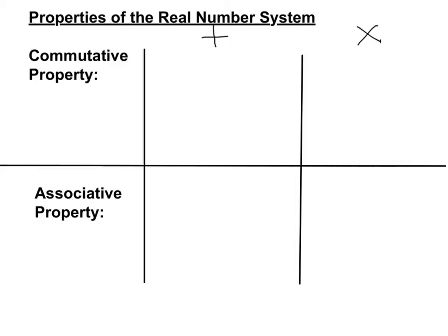The first property is the commutative property, which says that if you have any two real numbers and you add them together, a plus b is equal to b plus a. In other words, you can switch around the order of two things and it doesn't change the value — they still are equal. Likewise for multiplication, a times b equals b times a. For addition and multiplication to be commutative, you can switch the order of two things and it does not change the value of the answer.